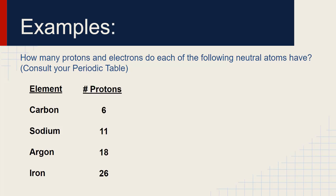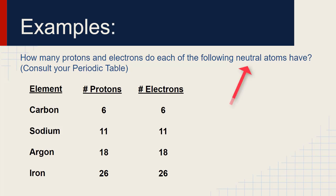For protons, you should have gotten six for carbon, 11 for sodium, 18 for argon, and 26 for iron. For electrons, you should have also gotten six, 11, 18, and 26. These are neutral atoms — which means the number of protons and electrons have to be the same.